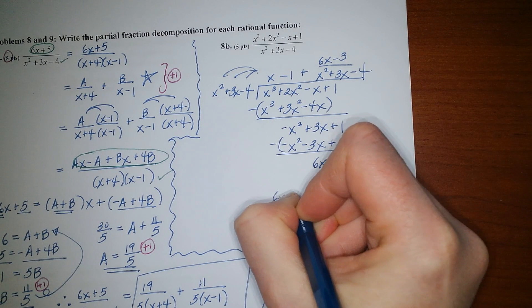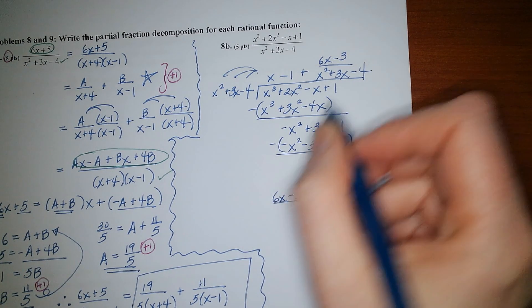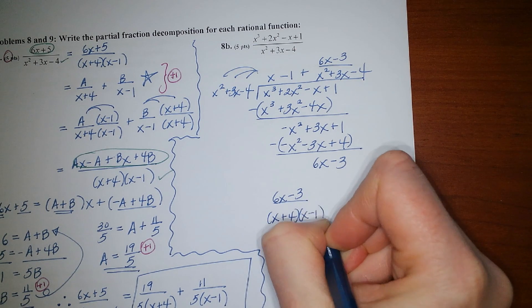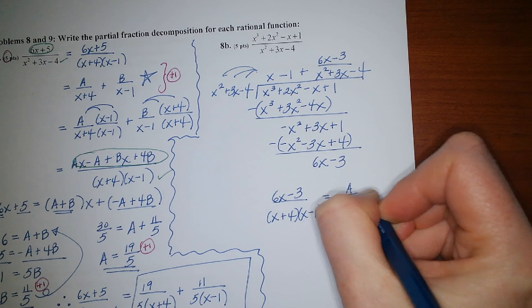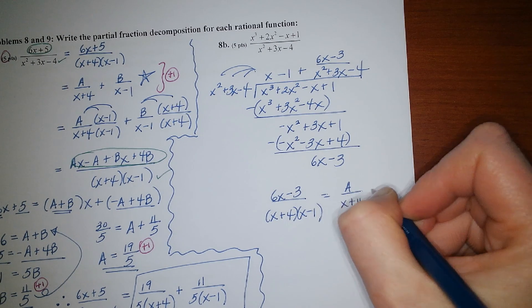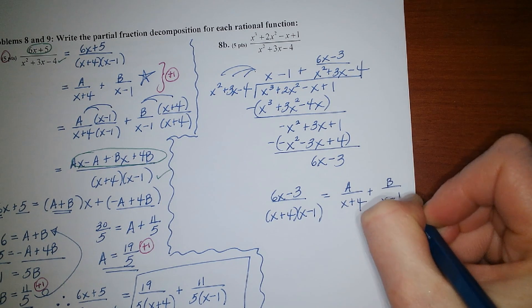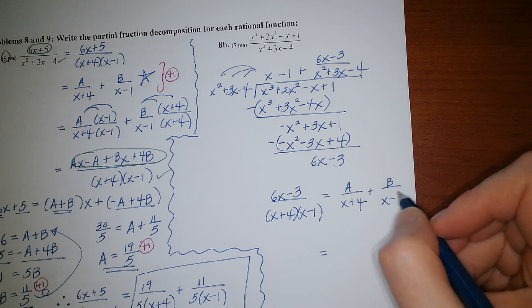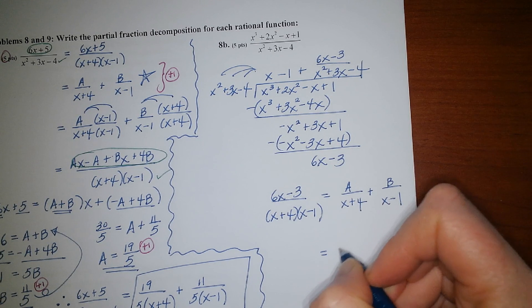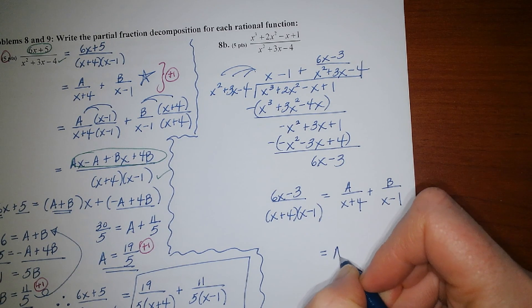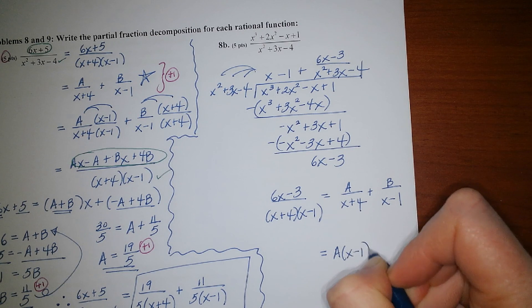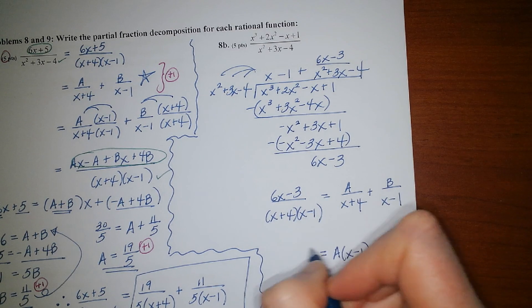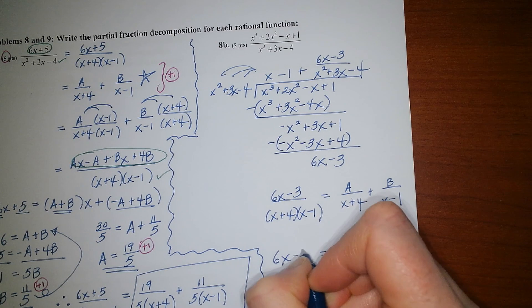So then 6x minus 3, I'm going to go ahead and factor the denominator as x plus 4 times x minus 1, the form. And then we'll basically just start getting common denominators. So when you get to the point where you're setting numerators equal to each other,